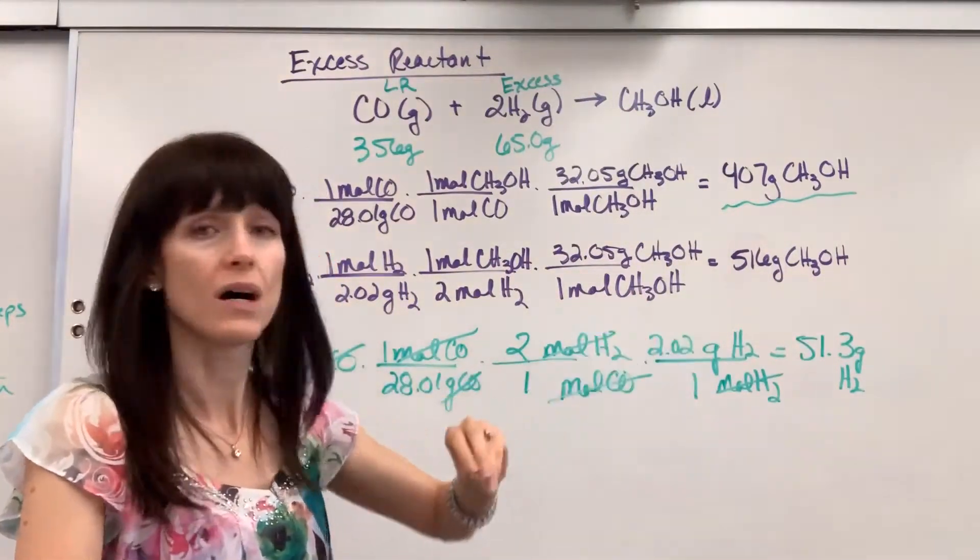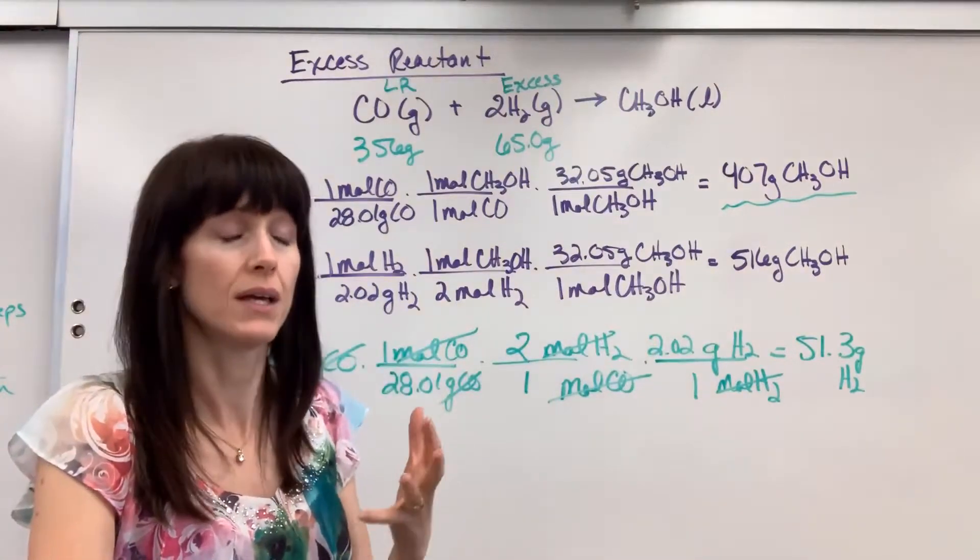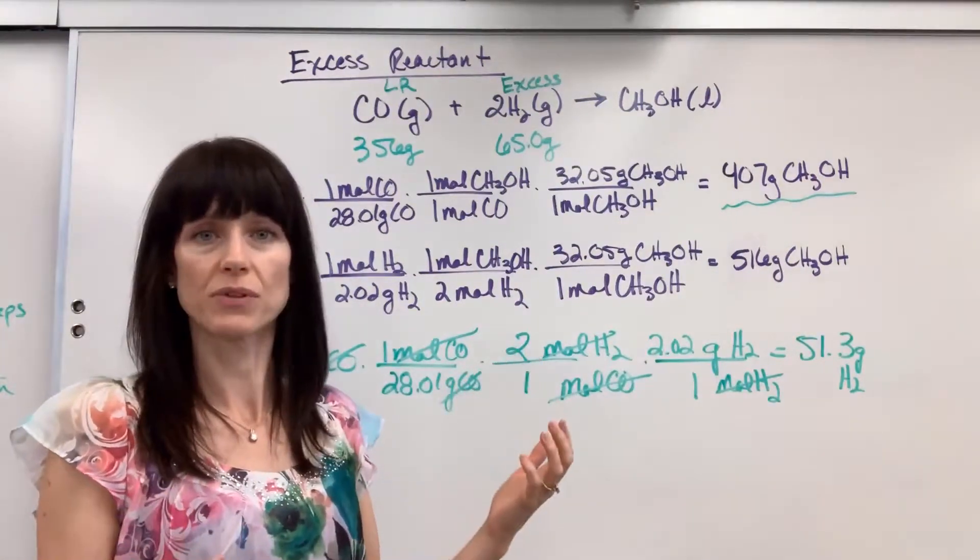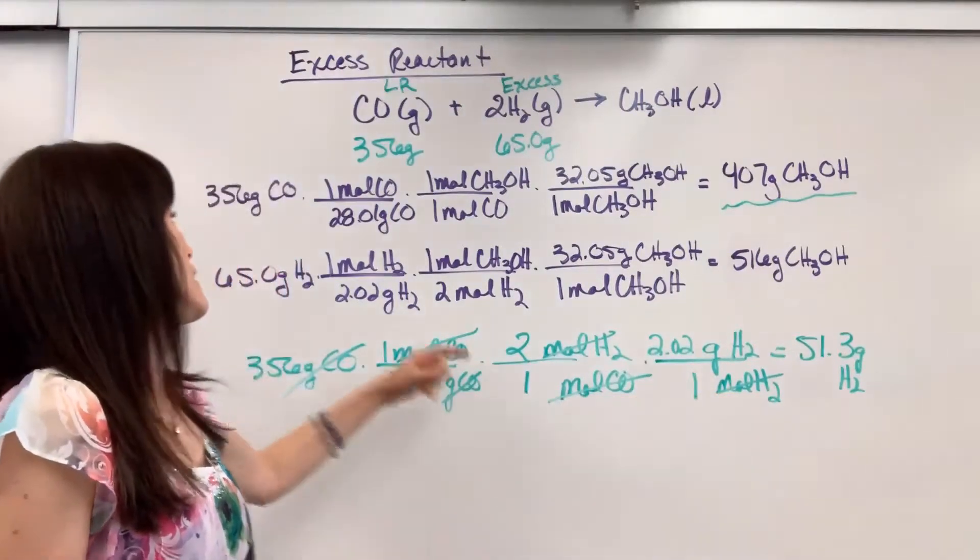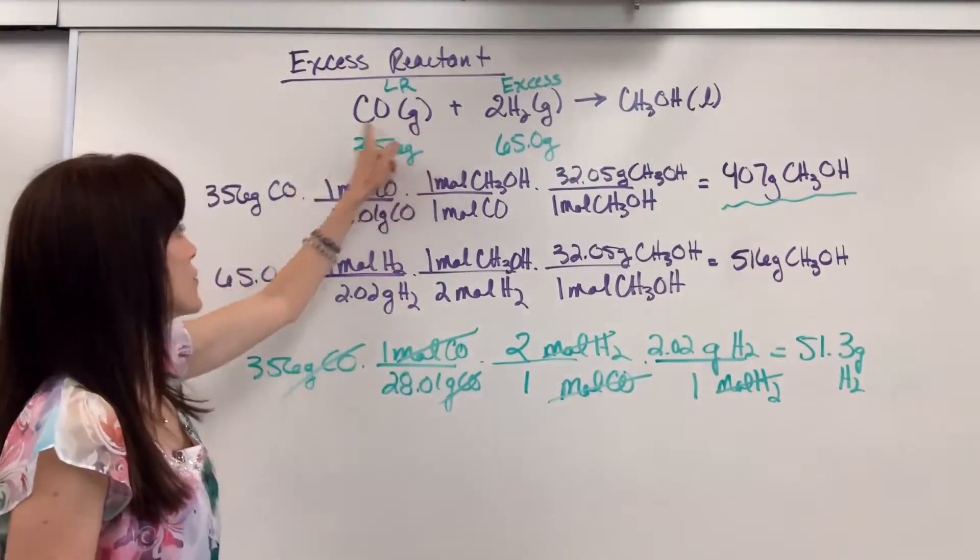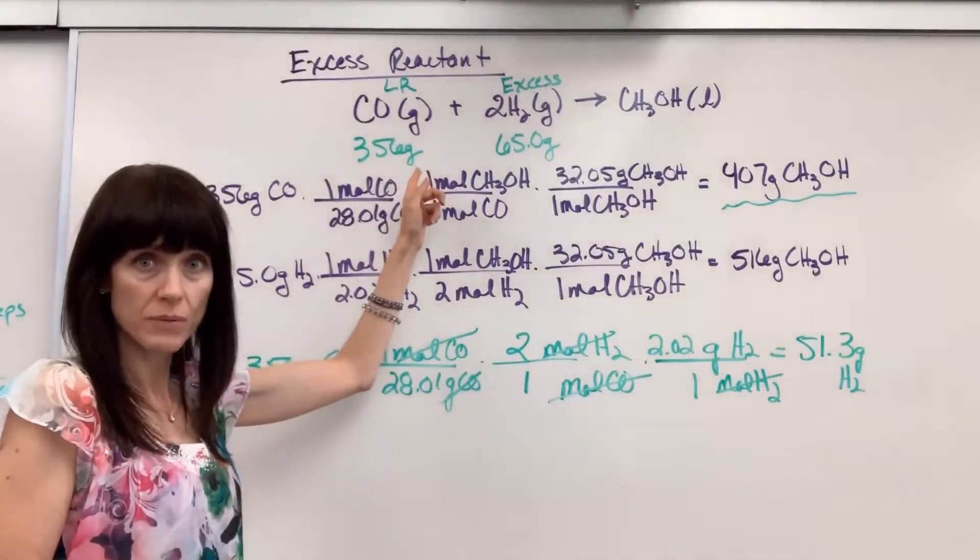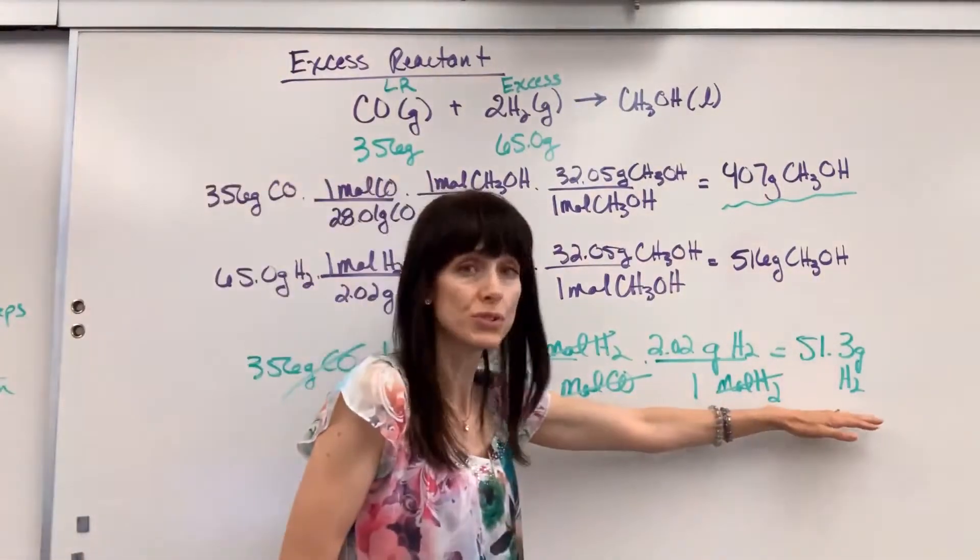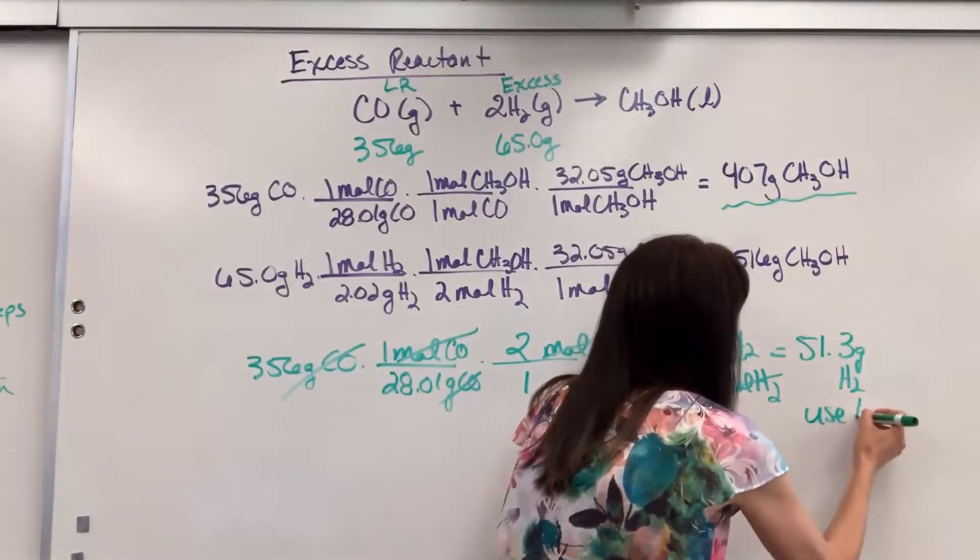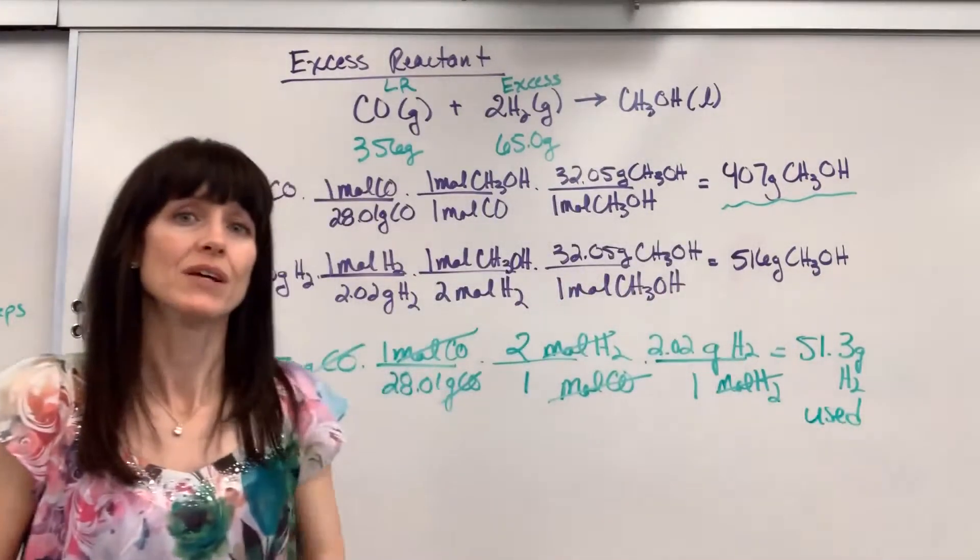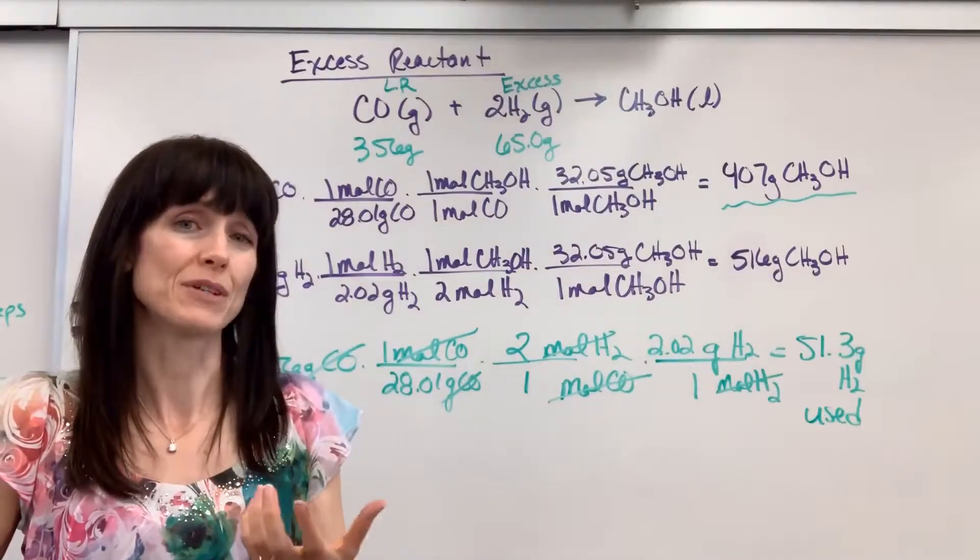Sometimes we'll do all this math and get an answer and we lose the forest from the trees. What is that number? If we use all 356 grams of carbon monoxide, we will consume, we will use 51.3 grams of hydrogen. So that's how much we'll use, how much we need.